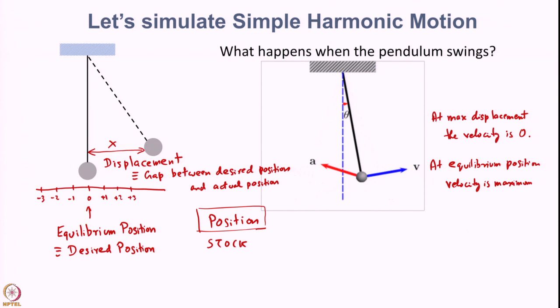This actually causes the pendulum to overshoot. The velocity is maximum at the equilibrium position and minimum at the extreme position, and it keeps oscillating. In that sense, velocity also oscillates. Let us define velocity also as a stock.